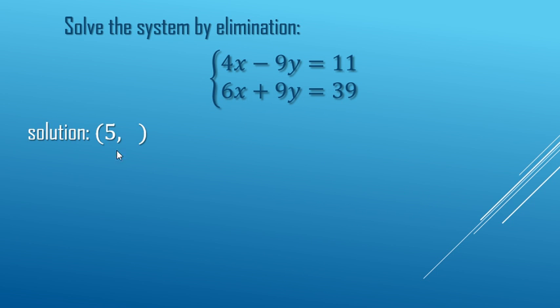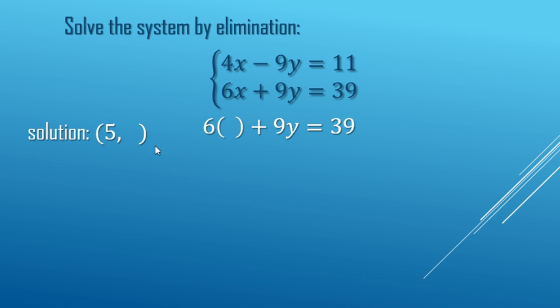Next we need to find the value for y. You can use either one of these equations. I'm going to use the bottom one — it has less negatives in it, more positives. But instead of an x, we are going to substitute what x is equal to. It's equal to 5.